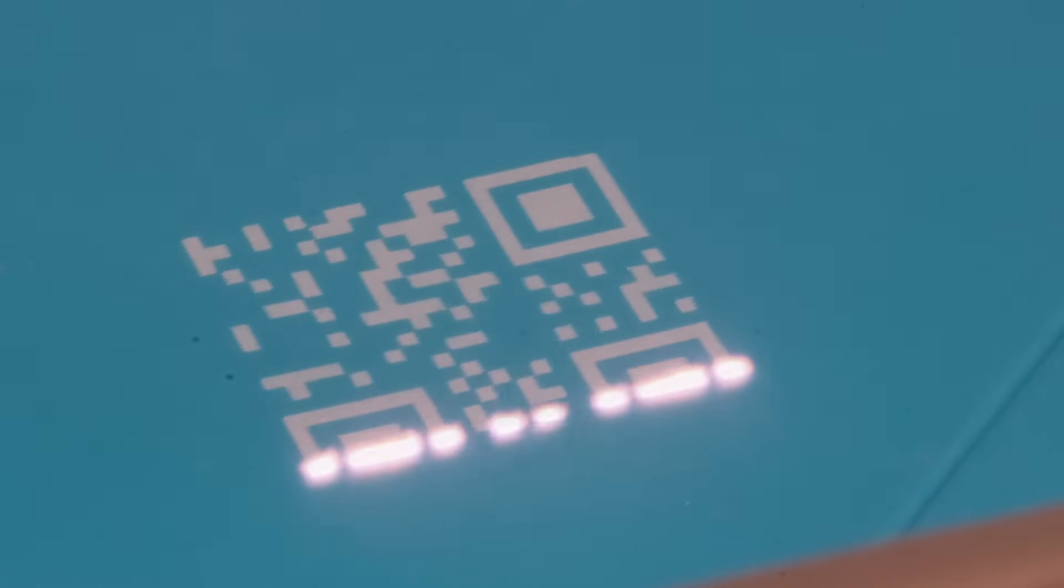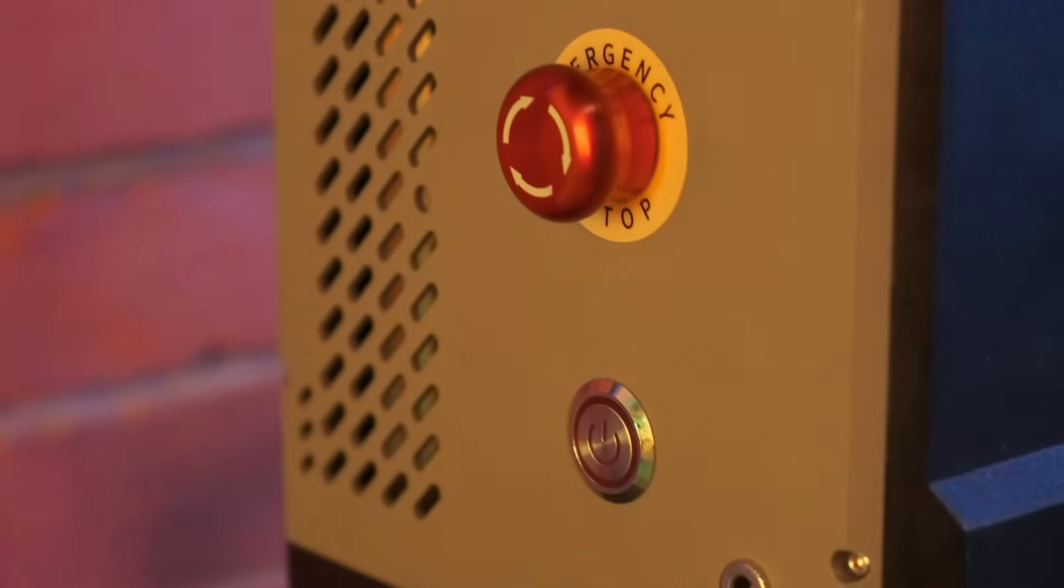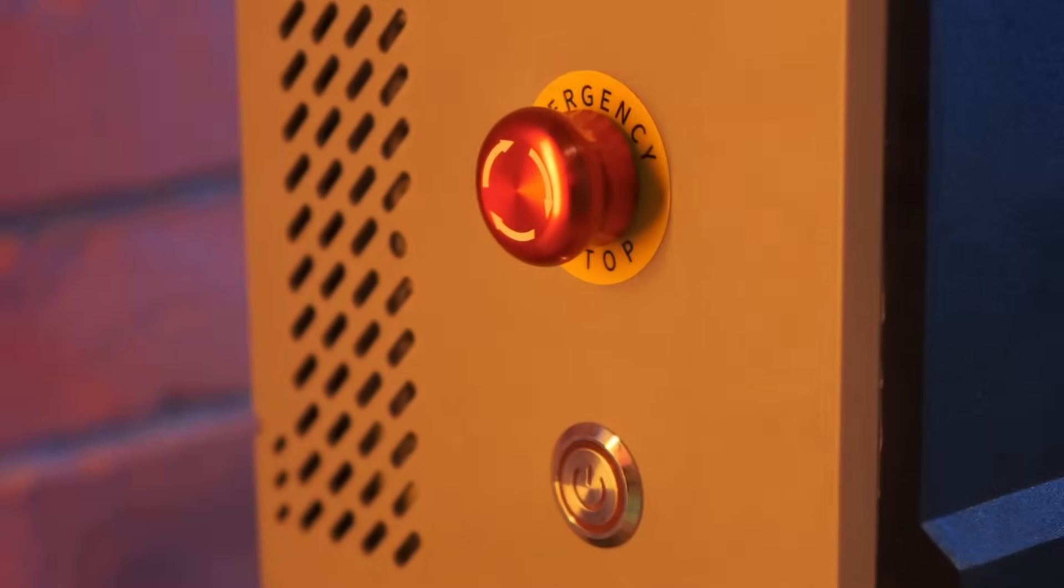You can also create QR codes or barcodes directly from the device. Just type in the text you want, and the device will generate the image itself.